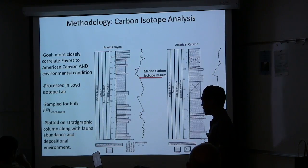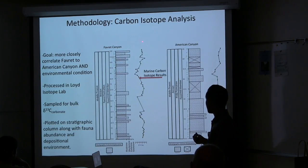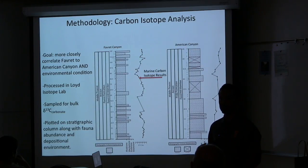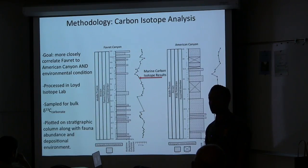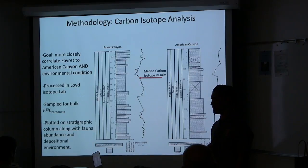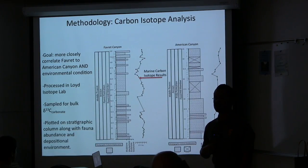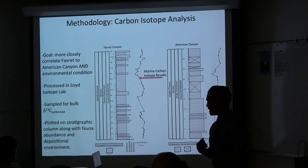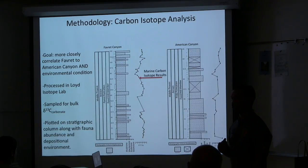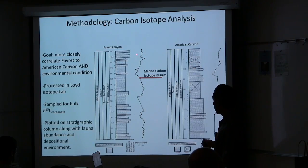The carbon isotope analysis uses stratigraphic columns from Fabric Canyon and American Canyon, each recording its own isotope trend. The project goals were to more closely correlate Fabric to American Canyon and determine some environmental conditions. Samples were processed in Dr. Shawn Lloyd's stable isotope geochemistry lab at Cal State Fullerton. Thin section billets were identified for non-diagenetically affected surfaces, sampled for bulk delta C-13 carbonate, processed in triplicates, converted to powdered form, acidified, and left overnight, then extracted for CO2, mass, and total inorganic carbon. Final results were plotted onto the stratigraphic column along with fauna abundance and depositional environment.